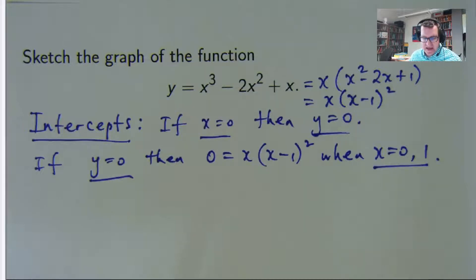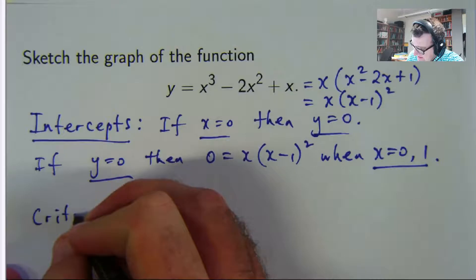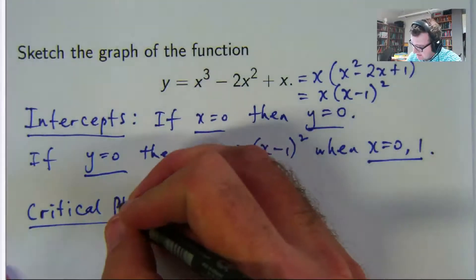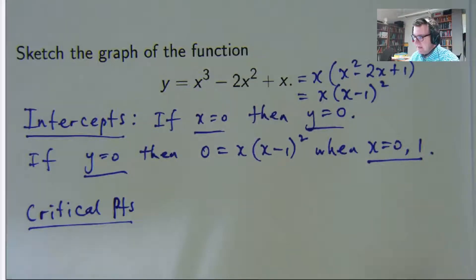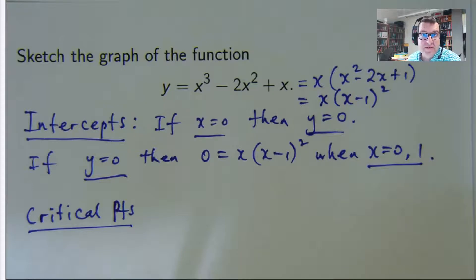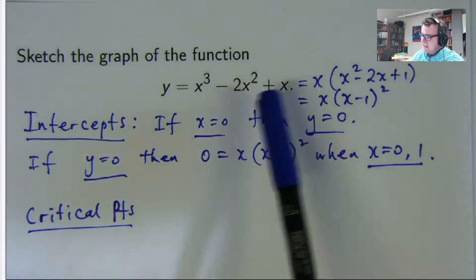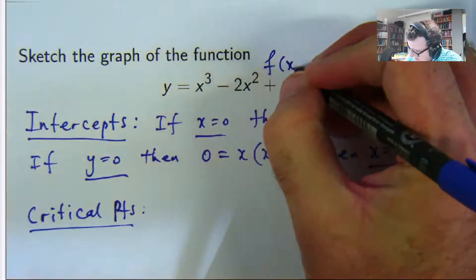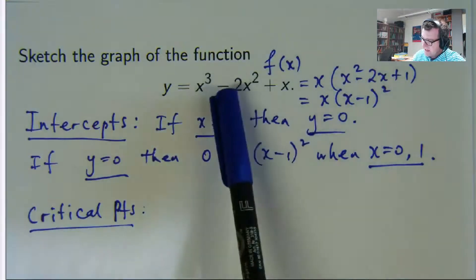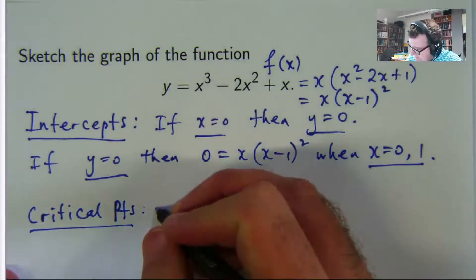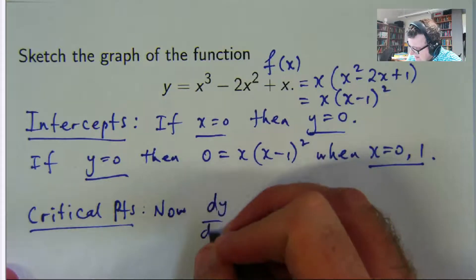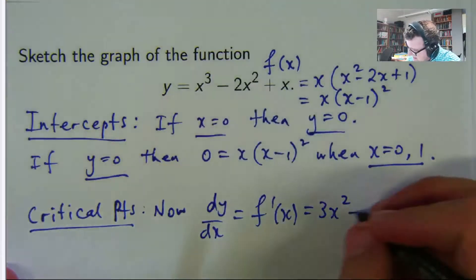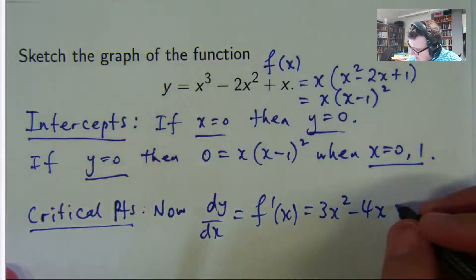Let's use a little bit of calculus now. The first thing we look at is the critical points. A critical point, as we looked at in earlier videos, is just where the derivative of the function is 0. So let's differentiate this and set it equal to 0. If this is f(x), then the derivative is going to be 3x squared minus 4x plus 1 — the 3 comes to the front and you decrease the power by 1, the 2 comes to the front, decrease the power by 1, and the x gives just plus 1.